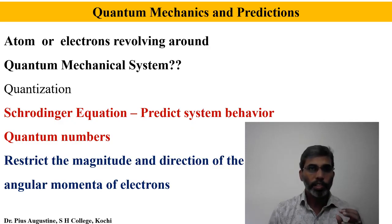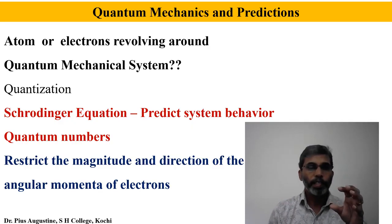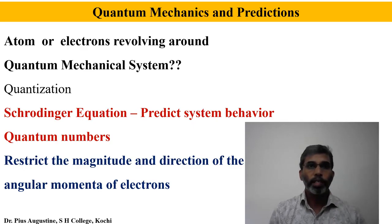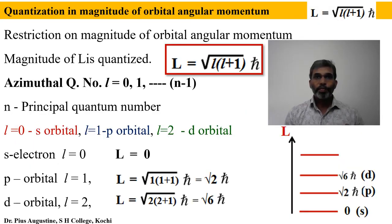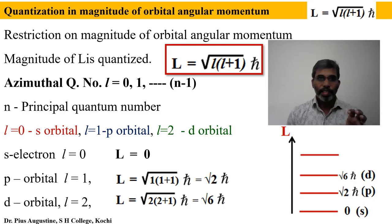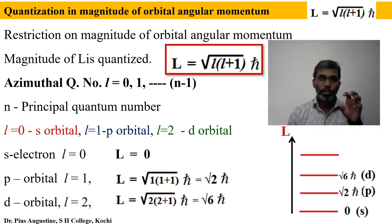These quantum numbers put restrictions on the magnitude and direction of angular momentum of each electron. Quantum mechanics plays a significant role, and the Schrödinger equation solutions are very important in discussing these restrictions or quantization of angular momentum of the electron. The magnitude of the orbital angular momentum of a bound electron revolving around the nucleus is restricted by the equation: capital L equals square root of l(l+1) times ħ. This expression comes from the solution of the Schrödinger equation.